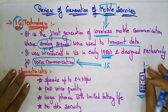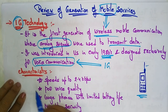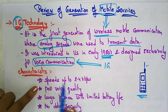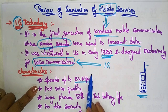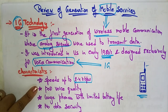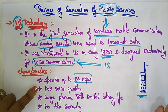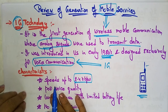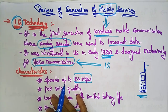The characteristics of first generation technology: the speed is up to 2.4 kilobits per second only. It had poor voice quality, large phones with limited battery life — the phones were very big in size and not very portable — and there was no data security. This is the first generation technology of mobile services.